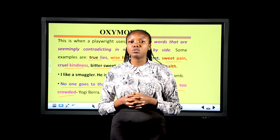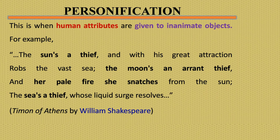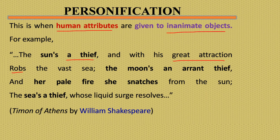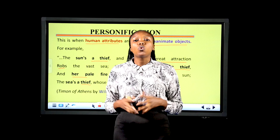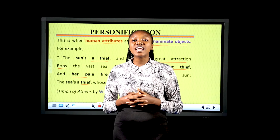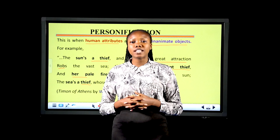Personification is when human attributes are given to inanimate objects. For example, from Timon of Athens by William Shakespeare: 'The sun's a thief, and with his great attraction robs the vast sea. The moon's an arrant thief, and her pale fire she snatches from the sun. The sea's a thief, whose liquid surge resolves.' Shakespeare in this excerpt gives inanimate objects human attributes.